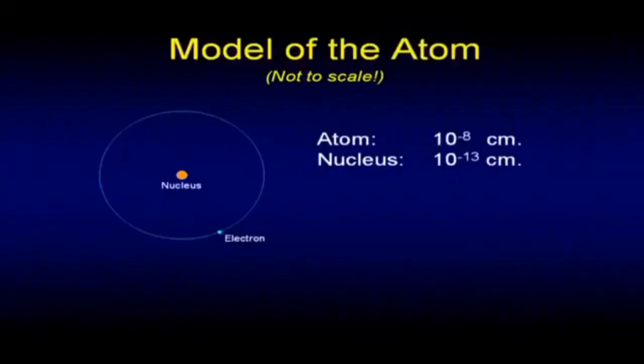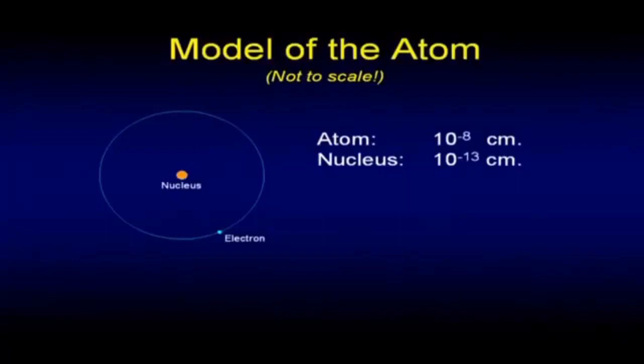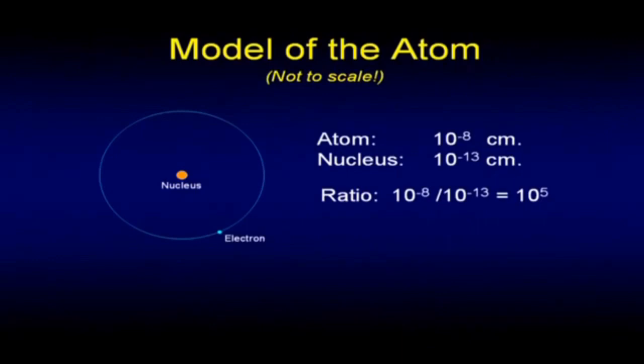We know the atom itself is in the neighborhood of 10 to the minus 8 centimeters. The nucleus of that is 10 to the minus 13 centimeters — much smaller. The important thing is the ratio between them. Whatever the nucleus is, the electron is 100,000 times that size in radius — that's 10 to the 5th. If I make the nucleus a golf ball, the electron is actually three miles away. So if we were to build a model with a nucleus as big as a golf ball, our electron has to be three miles away.